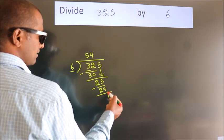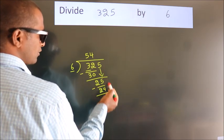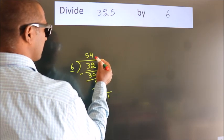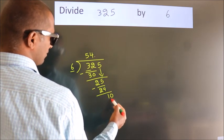After this, no more numbers to bring it down. So, what we do is, we put a dot and take 0. So, 10.